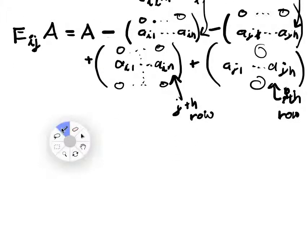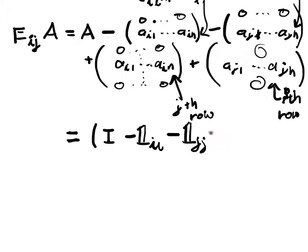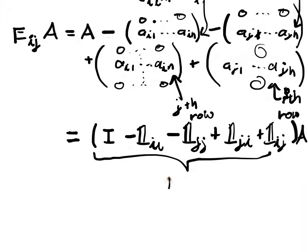And this matrix is a little bit complicated, seemingly this is really complicated, it's actually not. So actually what I'll get, it looks something like this. So I'll have, using the distributive law again, I'll get I minus 1_ii minus 1 in the j-j-th entry, plus 1 in the j-i-th entry, plus 1 in the i-j-th entry, times A. And this will be my E_ij.